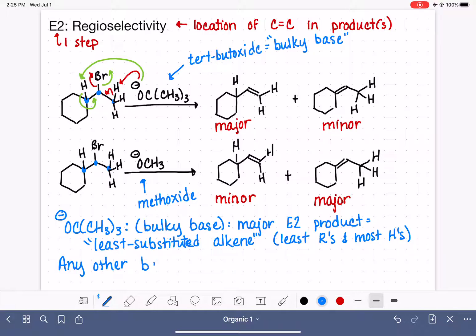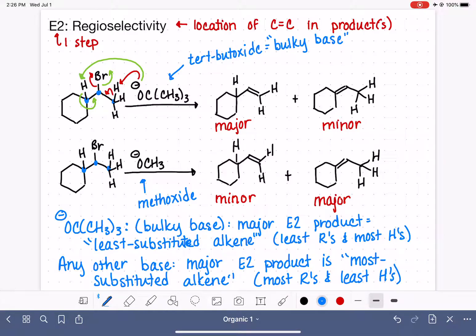When we are using any other base, anything other than tert-butoxide, the major product of the E2 reaction is our most substituted alkene. And this is going to be the alkene that has the most R groups and the least hydrogens. Now when we're counting R groups and we're counting hydrogens, we're only talking about counting the hydrogens and R groups that are on the carbon-carbon double bond. One R group and one, two, three hydrogens, or one, two, three R groups and one hydrogen.